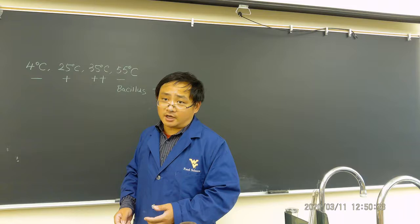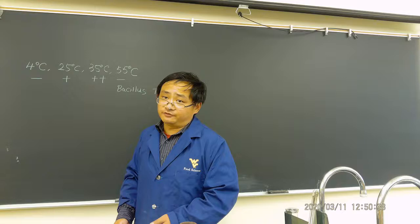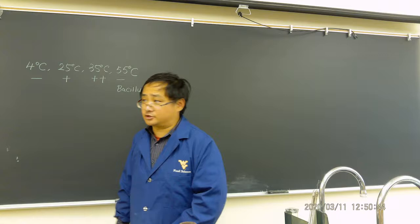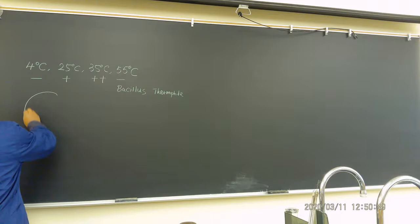Now look at the 25-degree Celsius results for Serratia. Did you see a beautiful red or pink-red color? That's Serratia. At 35 degrees Celsius, it's actually colorless. So you can see your results — that covers the impact of temperature on growth.